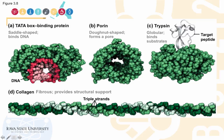This image shows the variety in which a polypeptide chain can fold to form different proteins. Some examples are the TATA box binding protein, which binds DNA and has a saddle shape; porin, which forms a pore in cellular membranes; and the fibrous protein collagen, which appears in strands, giving it strength to maintain cell integrity and provide structural support.